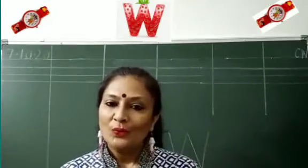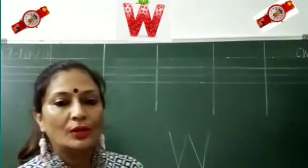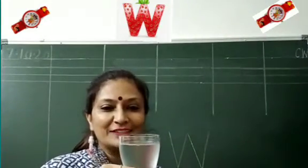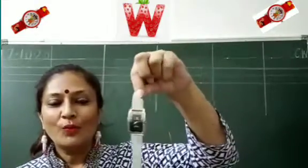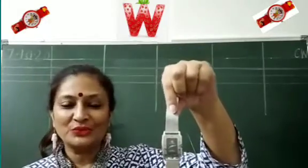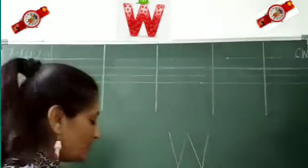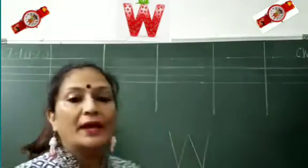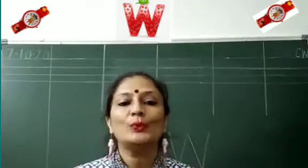Now we will write W. W for water. W for a watch. So let us learn to write W. It is very, very easy to write W. It can be written by joining two V.